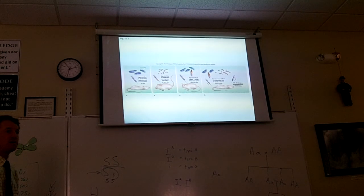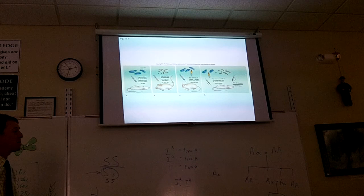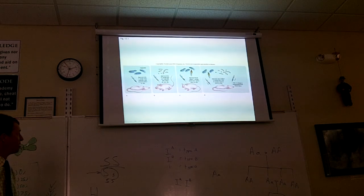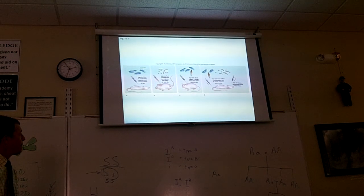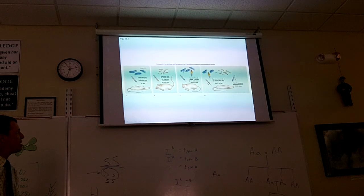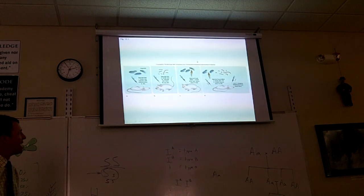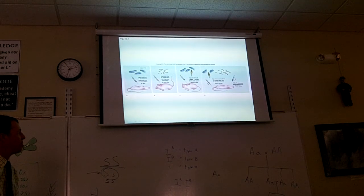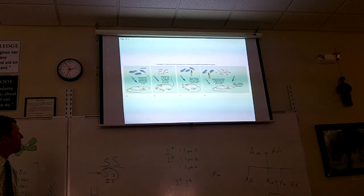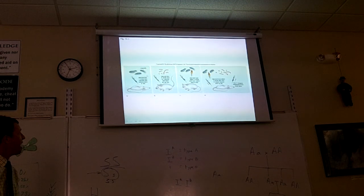Then Griffith heat killed the bacteria, which means he heated the bacteria up so hot that they would die. So the bacteria are dead now and he injects the dead bacteria in the mice and the mice all live. So obviously these bacteria will kill the mice if they're alive but not if they're dead.